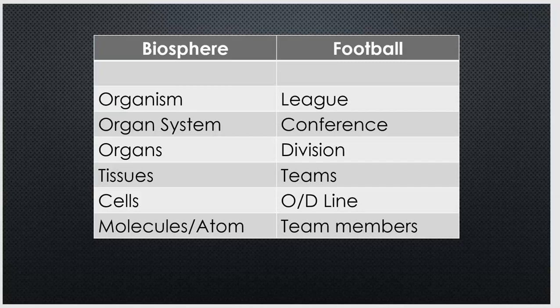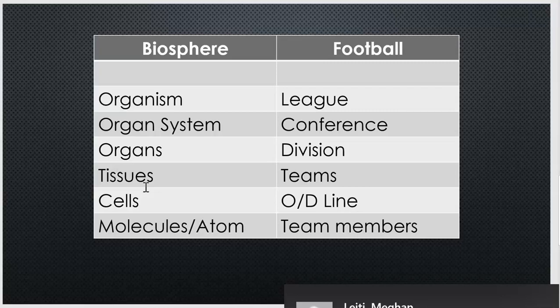Going back to our organism, we've got those organs broken down into tissues, the same way divisions are broken down into teams. Take that tissue and we break it down into different cells, the same way your team can be broken down into your offensive and your defensive line. And then we take those cells and break them down into molecules, and even further to atoms — just like the offensive and defensive lines can be broken down into individual team members. So your big idea is that in biology, just like in football, you start with a big organizational structure and then it gets broken down into smaller bits and pieces.